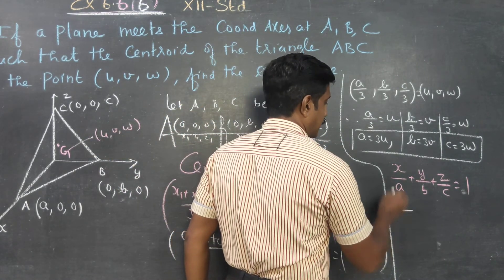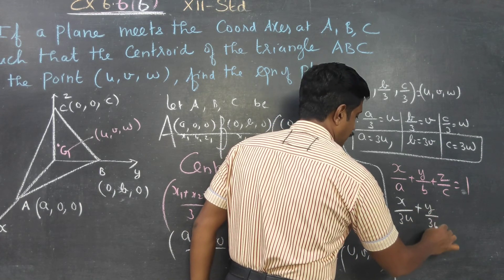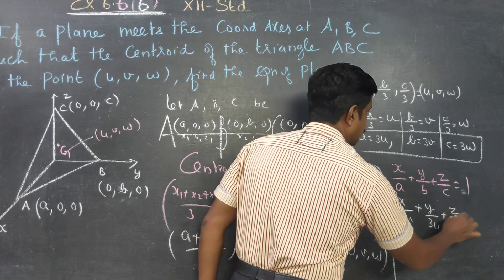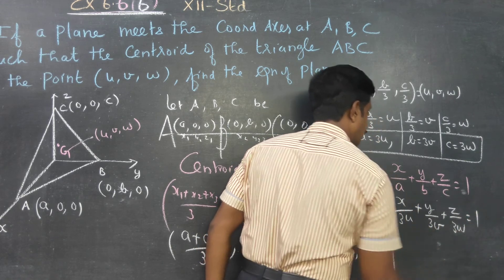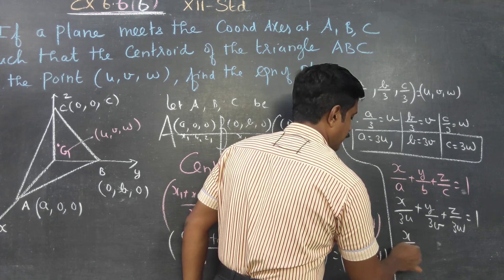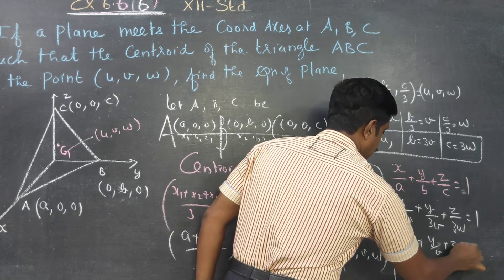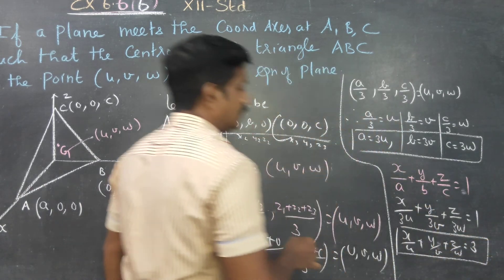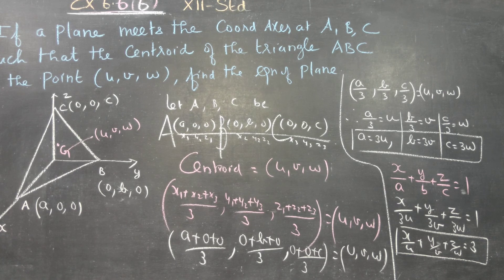Substituting our values: x/(3u) + y/(3v) + z/(3w) = 1, or x/u + y/v + z/w = 3 will be the equation of the plane for this given problem.